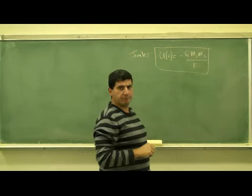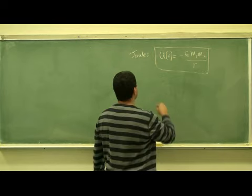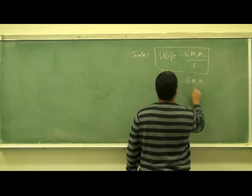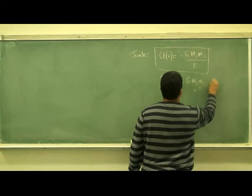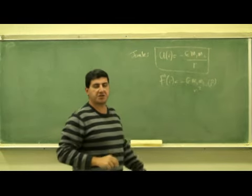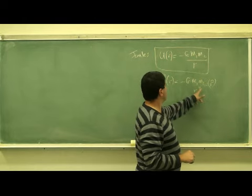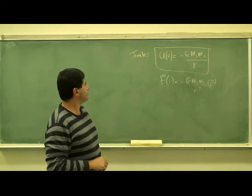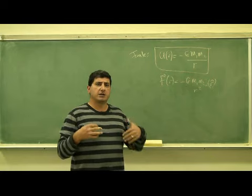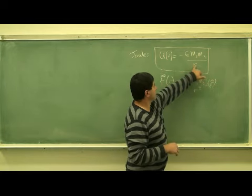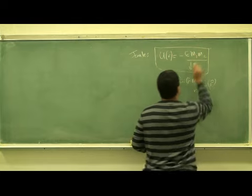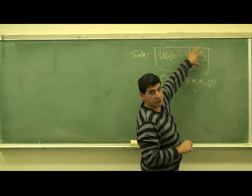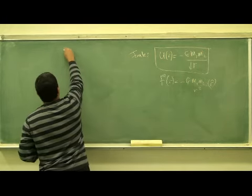The gravitational potential energy is always negative because gravity is always attractive. It resembles the force of gravity equation, F(R) equals negative GM1M2 over R squared R-hat, but the only difference is that instead of R squared you have R, and it is a scalar so there is no R-hat. You can see that the smaller R is, the larger the magnitude of the potential energy gets.